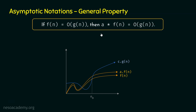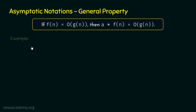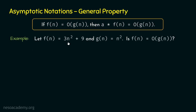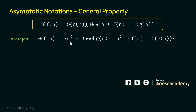In order to prove that this property is correct, let's take one simple example. Let's say F(n) is 3n² plus 9 and G(n) is n². We will first prove that F(n) is O of G(n), and after this, we will prove that A times F(n) is also O of G(n).